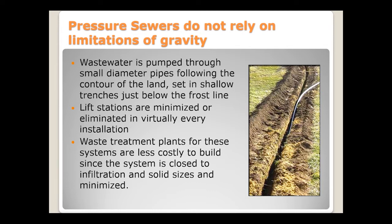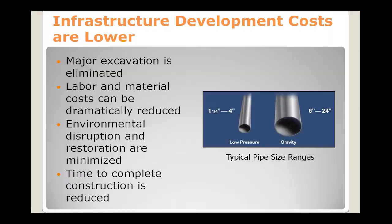The wastewater is pumped through small diameter pipe following the contour of the land in a shallow trench just below the frost line, transporting waste to the treatment plant at much less cost. Typical low pressure pipe size is inch-and-a-quarter coming out of the pump into force mains typically maxed out at four inch, sometimes six inch, compared to gravity which starts with much larger pipe requiring more labor and environmental disruption.